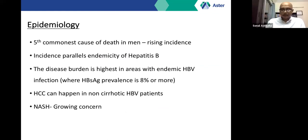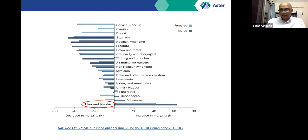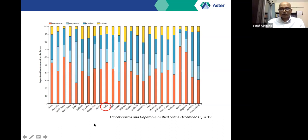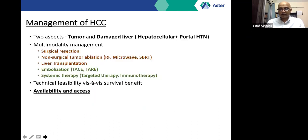In India, we see a lot of HCC linked to NASH, which is a growing concern, and this can also occur in non-cirrhotic patients. While mortality has shown a demonstrable decrease in most cancers, this is not the case for lung cancer, pancreatic cancer, melanomas, and liver and bile duct cancers, where mortality has in fact increased over time. In India, the cause of HCC is largely linked to viral disease, but NASH and alcoholic liver disease are becoming more prominent.